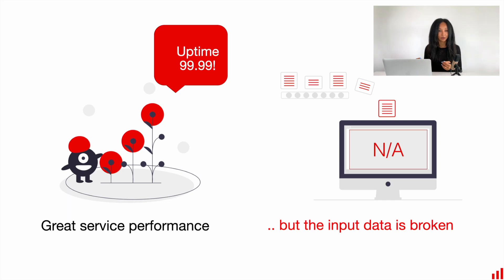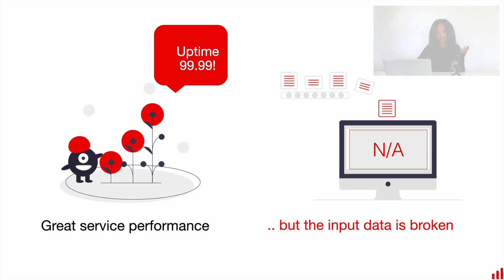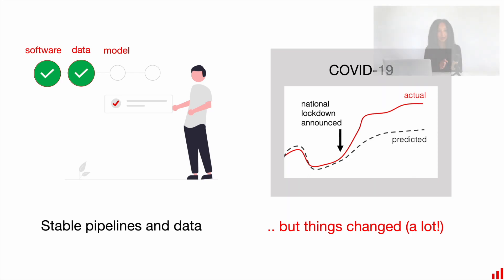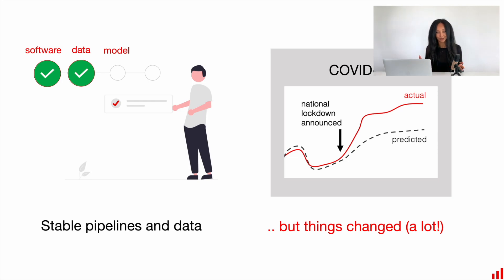Once you have service health monitoring implemented, you can move on to data quality and data integrity. As we discussed before, data quality is essential because in most cases when something is wrong with a machine learning model, it's because the input data is wrong. It's quite important to monitor for metrics like missing values, type mismatch for important features — especially if you use tabular data — and range violations. The idea is to make sure that all your pipelines used to load, pre-process, or generate feature engineering are stable.